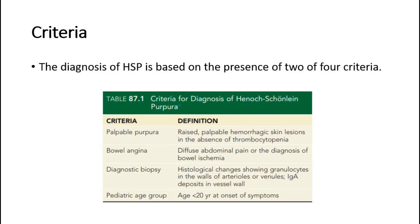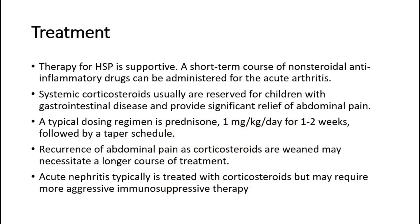For treatment, therapy for HSP is supportive. A short-term course of non-steroidal anti-inflammatory drugs can be administered for acute arthritis. Systemic corticosteroids are usually reserved for children with gastrointestinal disease and provide significant relief of abdominal pain. A typical dosing regimen is prednisone, one milligram per kilogram per day for one to two weeks, followed by a taper schedule. Recurrence of abdominal pain as corticosteroids are weaned may necessitate a longer course of treatment. Acute nephritis typically is treated with corticosteroids, but may require more aggressive immunosuppressive therapy.